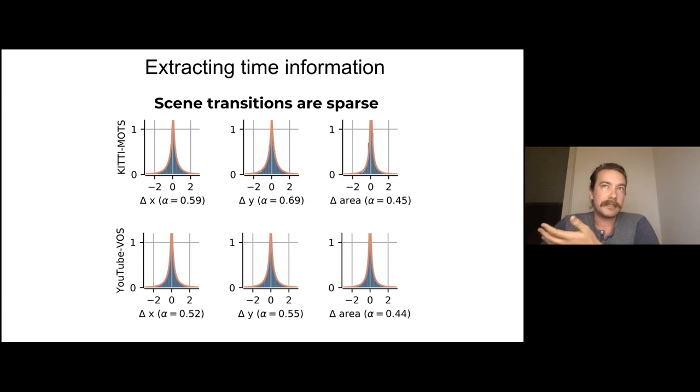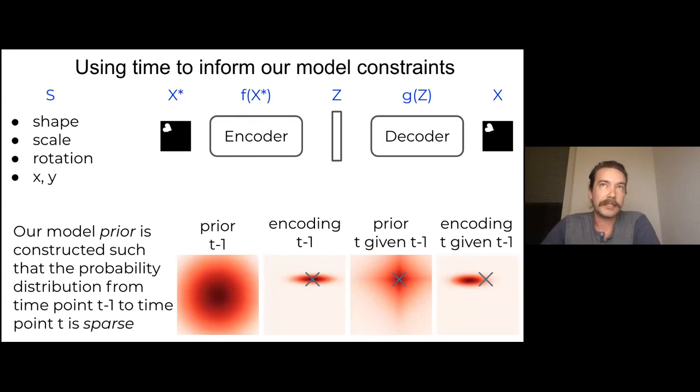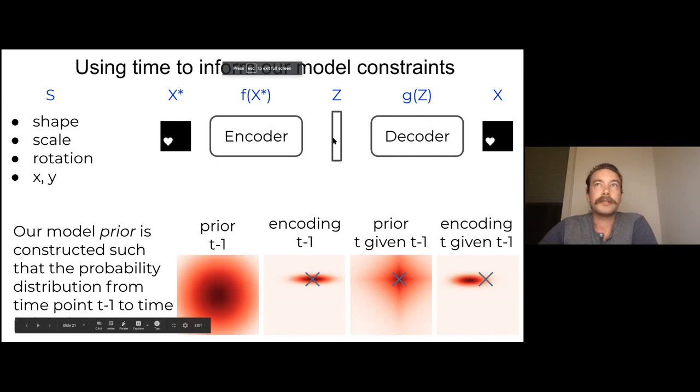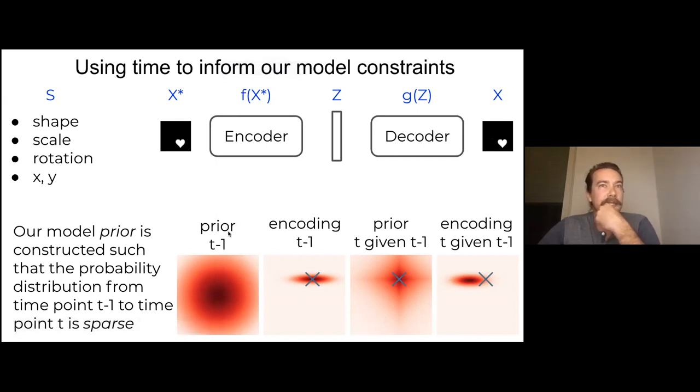So what that means is that they're peaked at zero and they have very heavy tails. So that means sharp changes could occur in some latent sources, but most of the other sources would remain unchanged between adjacent time points. So now when I'm saying sources, I mean properties like position, identity, and size. So as an example, if you imagine you're sitting at a traffic light and someone's going across the crosswalk, that person's X position might change quite a bit in time, but their size and identity and shape are relatively constant. Using this idea, we decided to constrain our model by imposing a prior that adhered to this statistic that we see.